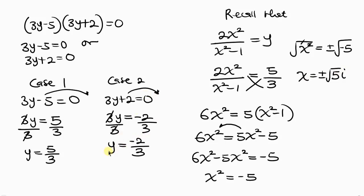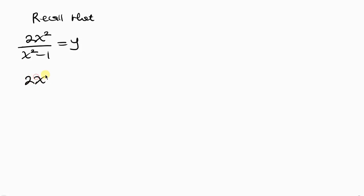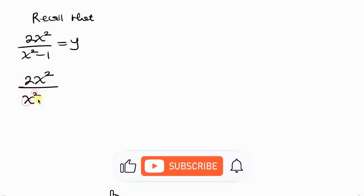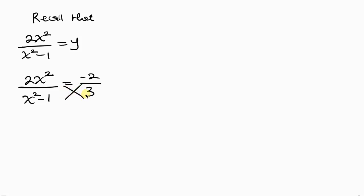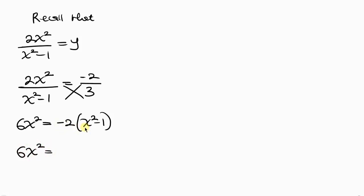Now let's solve Case 2, when y = -2/3. So 2x²/(x²-1) = -2/3. Cross-multiplying: 3 × 2x² = 6x² = -2(x²-1). Distributing: 6x² = -2x² + 2.